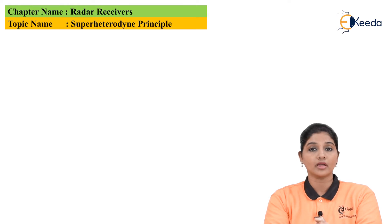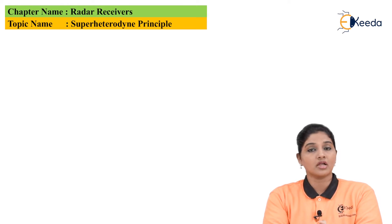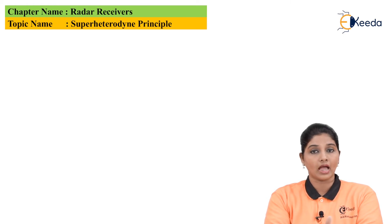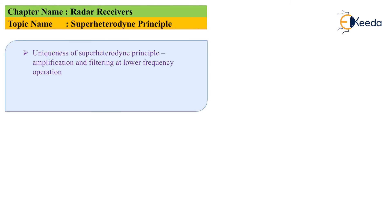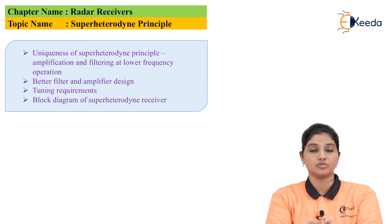Now let's move on to the block diagram of the super heterodyne receiver. Before moving to the block diagram, let's first understand what we are going to discuss. The points are: the uniqueness of the super heterodyne principle — that is, amplification and filtering at low frequency operation; filter and amplifier design; tuning requirements; the super heterodyne block diagram; and finally some MCQs.